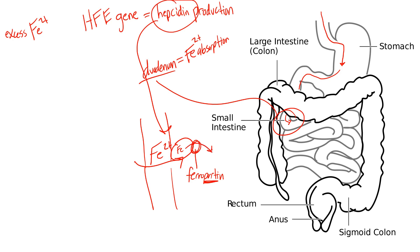Ferroportin controls how much iron enters the blood, where it will bind to a protein called transferrin. This iron bound to transferrin travels to the liver, where it is stored within hepatocytes bound to a protein called ferritin.